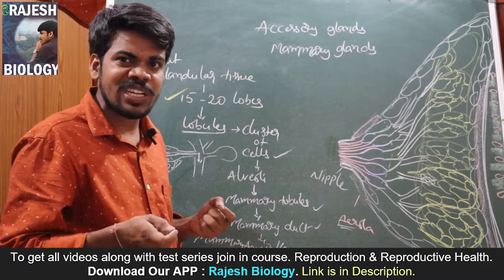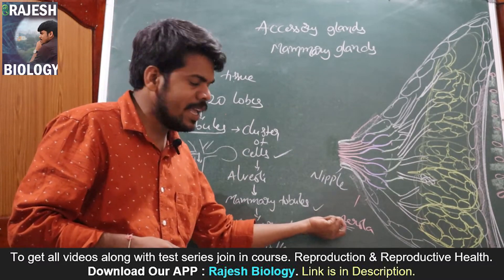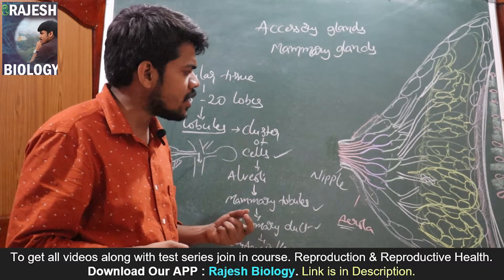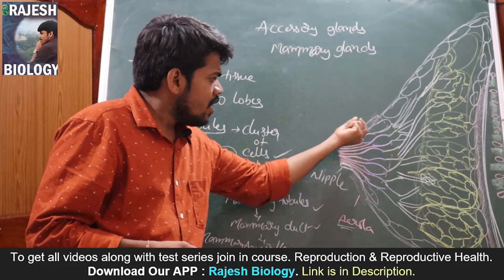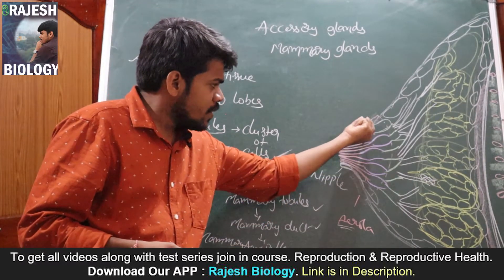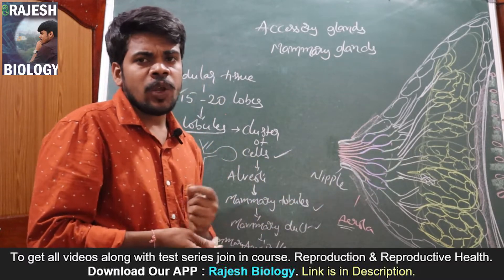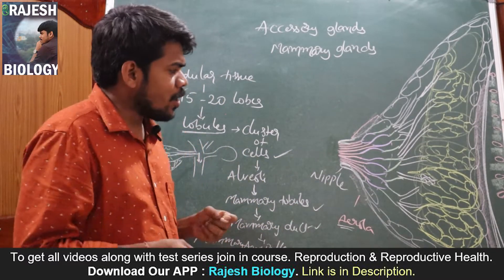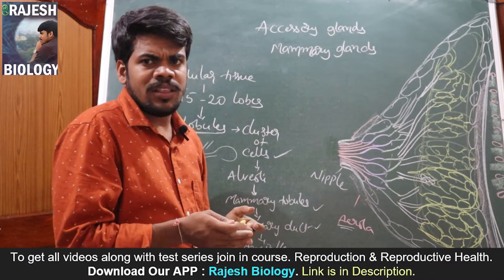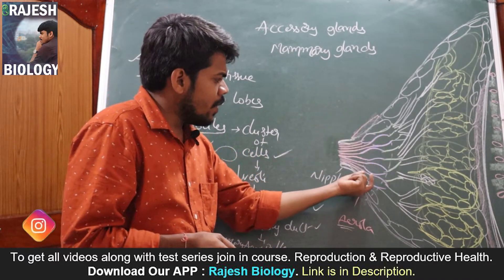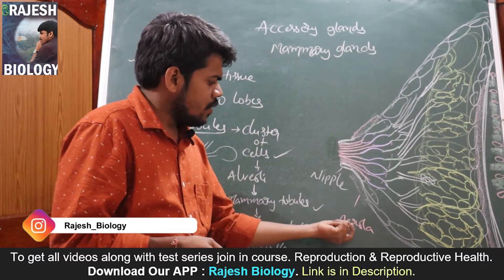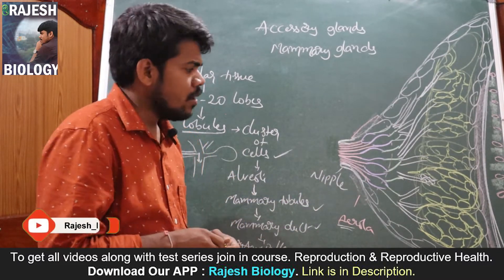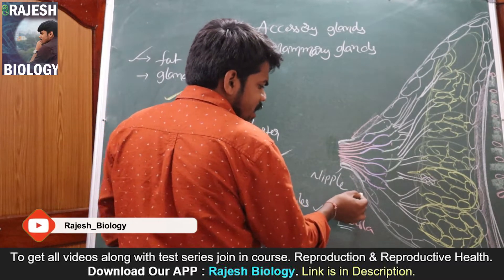The areola is the area of the mammary gland where there is no hair. This areola has sebaceous glands that secrete an oily substance to protect the nipples and this area. When the babies suck the milk, these glands protect the area from cracking.